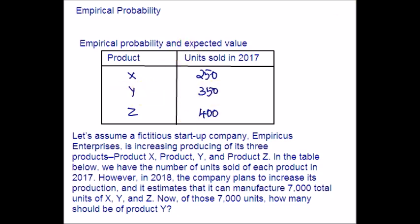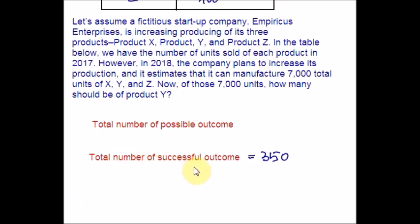Let's start by computing the empirical probability that a random customer, when faced with buying X, Y, or Z, will choose Y. So, from last year's data, that is from the table, the proportion of units sold that were product Y was 350 out of the entire total. So, this is the total number of successful outcome. So, let us find the total number of possible outcomes. Possible outcome is just add all these. Total number of successful outcome is buying product Y. It is given that 350 from the table. And total number of possible outcomes is you just have to add the products X, Y, and Z sold. So, 250 plus 350 plus 400, which is nothing but 1,000.